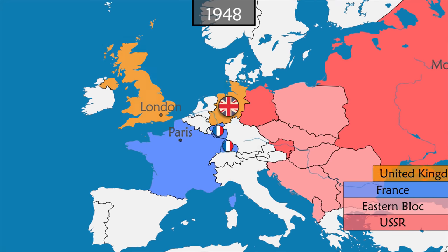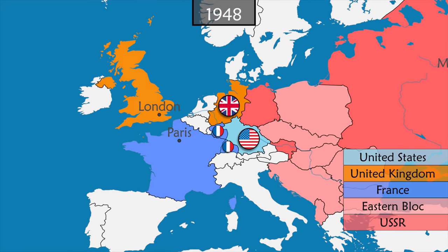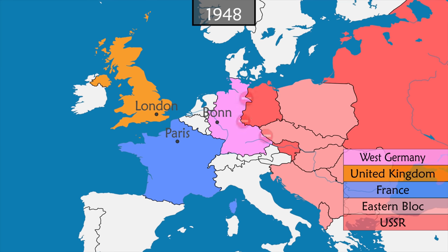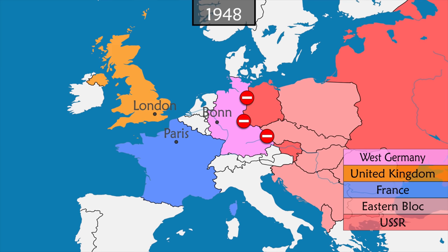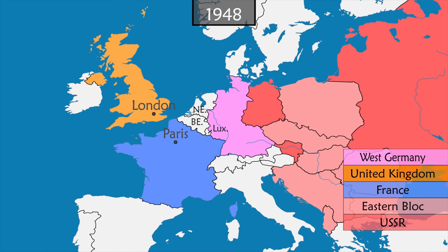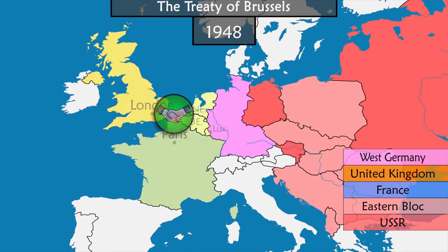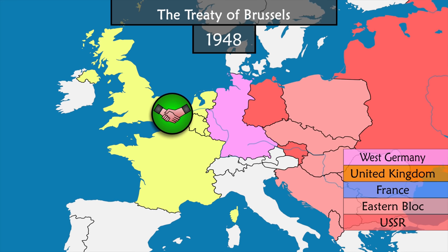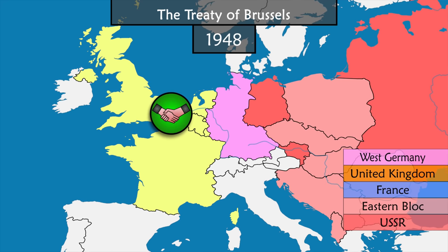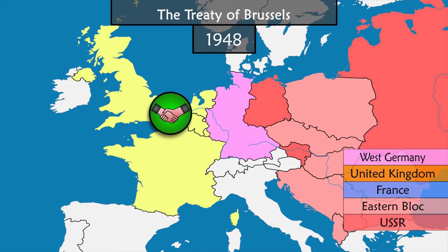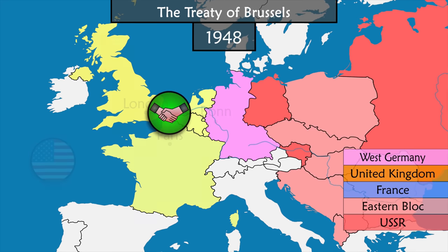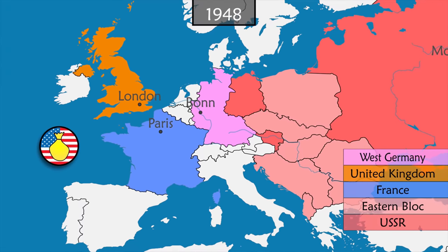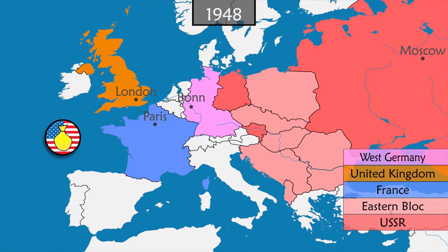France, the United Kingdom, and the United States agree to unite their occupation zones in Germany in order to create a democratic German state that will block Soviet influence. In addition, the Benelux countries, France, and the United Kingdom sign a defensive alliance to protect themselves against a possible return of German power and against military intervention by the USSR, which has the largest army in the world. The United States offers credits to Europe via the Marshall Plan to accelerate reconstruction and stem the spread of communism.